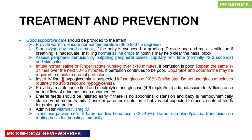If perfusion remains poor, consider starting dopamine or dobutamine infusion. Insert an IV line as the baby may become hypoglycemic. Do not give glucose boluses routinely for hypoglycemia in neonates due to the risk of rebound hypoglycemia — instead give an infusion of 10% dextrose at 2 mL/kg and provide maintenance fluids with electrolytes and glucose at 4–6 mg/kg/min. Add potassium to IV fluids once normal urine output is established. Initiate enteral feeds early if there is no abdominal distension and the baby is hemodynamically stable; otherwise consider parenteral nutrition due to risk of necrotizing enterocolitis. Administer vitamin K 1 mg IM, and transfuse packed cells if hematocrit is <35%.